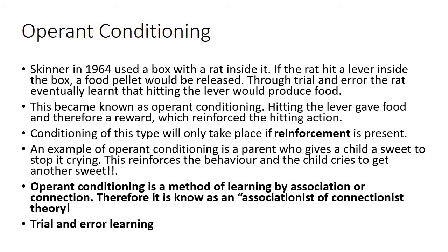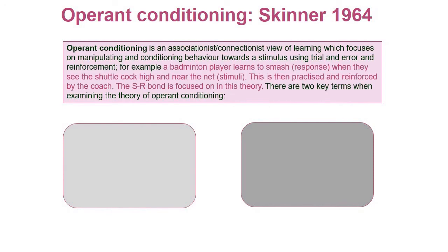It's also known as trial and error learning. An associationist or connectionist view of learning focuses on manipulating and conditioning behavior towards a stimulus using trial and error. In a sporting context, a badminton player learns to smash when they see the shuttlecock nice and high and near the net - the stimulus prompts the response of smashing to win the point. That situation is practiced and reinforced by the coach or by gaining a point. The stimulus-response, or SR bond, is the focus of this theory.